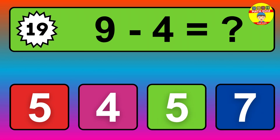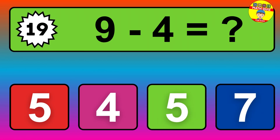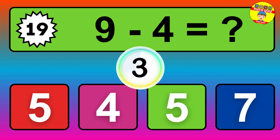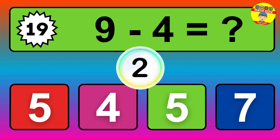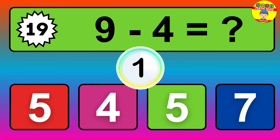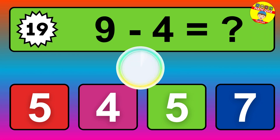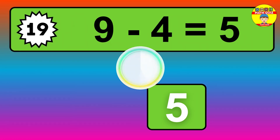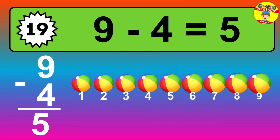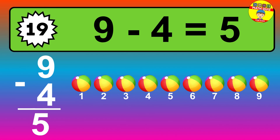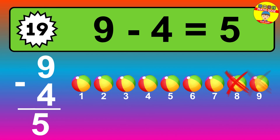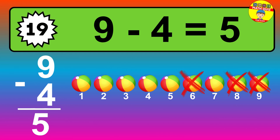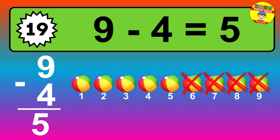Question nineteen: nine minus four equals what? So the answer is nine minus four is five. Let's count it: one, two, three, four, five.